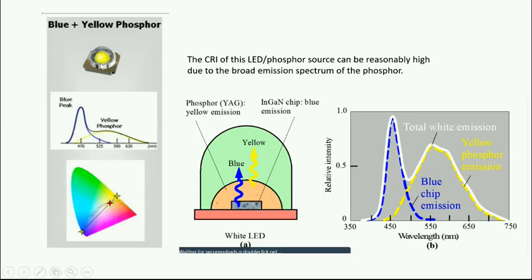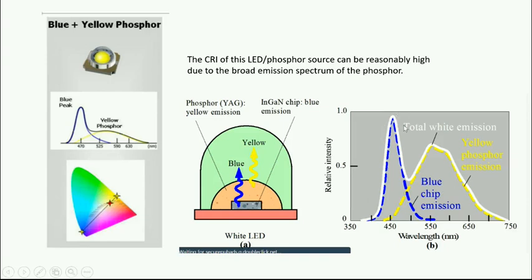In simple terms: blue LED plus YAG phosphor powder gives a white light output. In a single chip, the blue LED excites the yellow phosphor encapsulated in a globe to generate white light. The combined spectrum shows a blue LED peak and a yellow phosphor peak. When mixed, they cover the entire visible region. Just as Newton's rings spinning at high speed appear white, our human eye perceives this combined spectrum as white light.